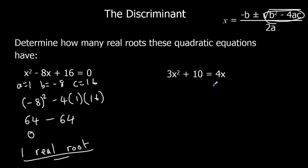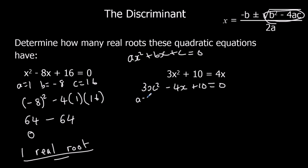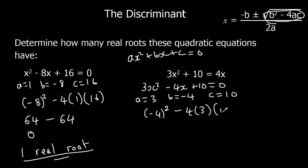The second one isn't in the right form, so we have to rearrange it first. The right form is ax squared plus bx plus c equals zero. Taking 4x from both sides gives us 3x squared minus 4x plus 10 equals zero. So a is 3, b is negative 4, and c is 10. Calculating b squared minus 4ac: negative 4 squared is positive 16, minus 4 times 3 times 10 is 120. 16 take away 120 is negative 104. It's negative, so it's got no real roots.